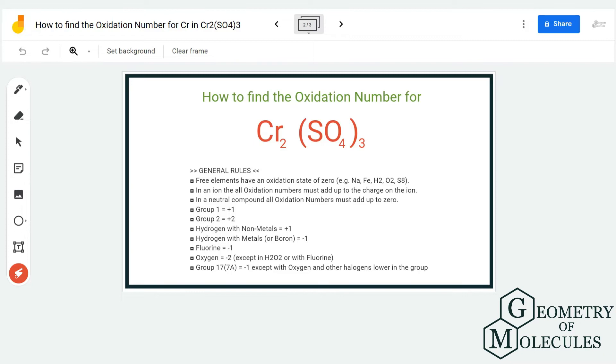Now to find out the charges for Cr₂, first we are going to look at the charges of SO₄. You can also follow these general rules that can help you understand the process better. The SO₄ as a group completely has a charge of minus 2, but as there are 3 of them present here, we are going to multiply this number by 3.